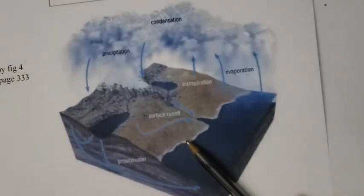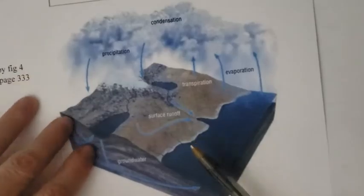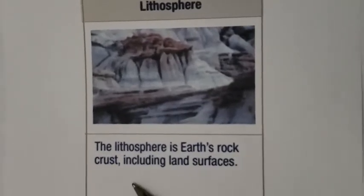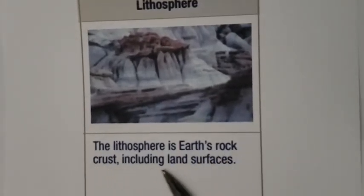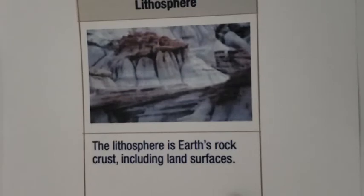So the atmosphere is gas around the Earth, the hydrosphere is all the water on Earth. The next one is the lithosphere. The lithosphere is Earth's rock crust, including land surfaces — it's all the rock that we have, and that definitely affects climate.